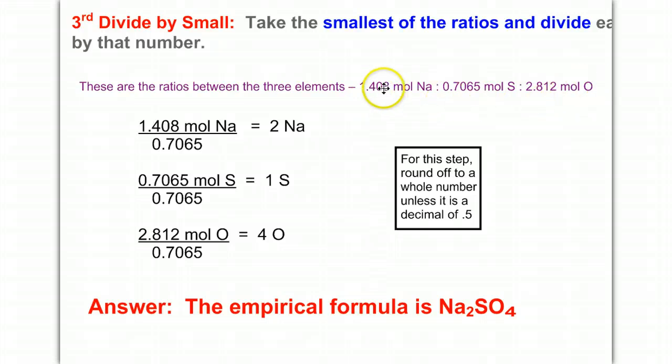Here are my moles of sodium, sulfur, and oxygen, which gives me a ratio of the three. I'm going to take these and do the third step: divide by small. This means you will take the smallest of the three ratios and divide each of them by that number. The smallest of these three ratios is 0.7065 moles of sulfur. Notice I'm going to take that and divide each by it. You're always going to end up with something that's one since it'll be divided by itself.